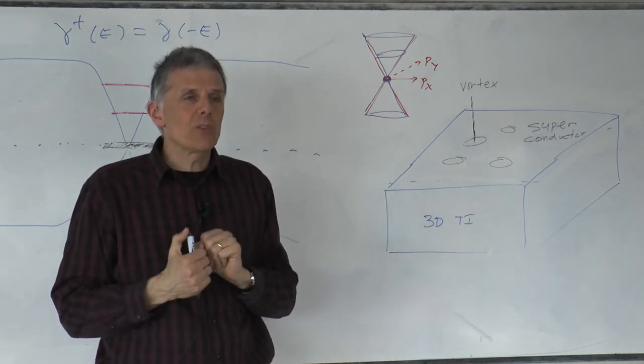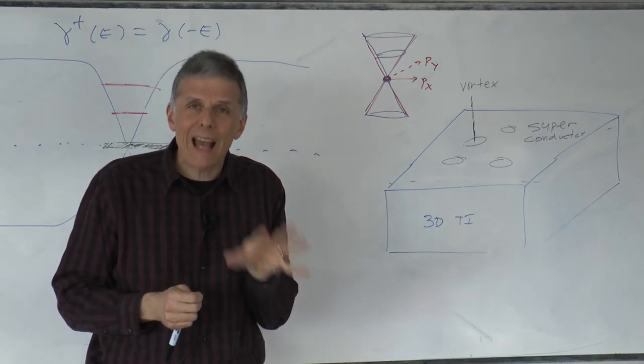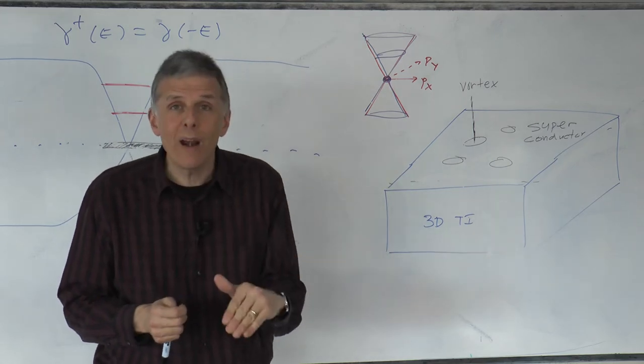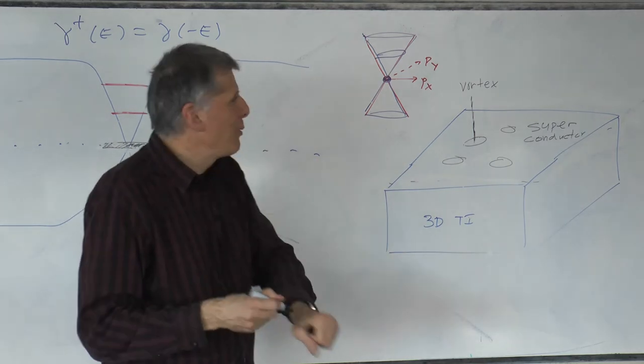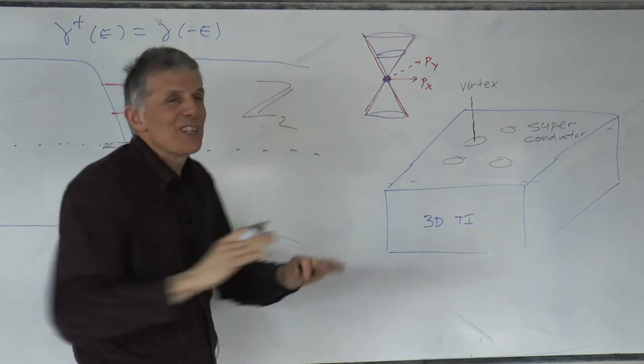And the technical term which we use in this context is that we say that the quantum number which counts Majoranas can only take on the value zero or one. And in a somehow sophisticated way of saying this, we say that the quantum number is Z2, just zero or one.